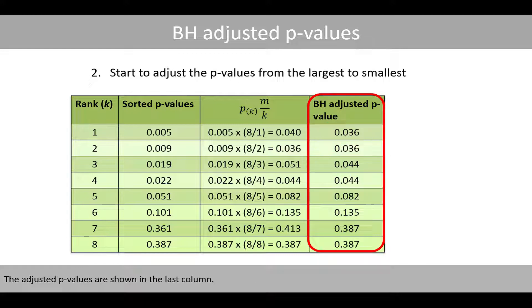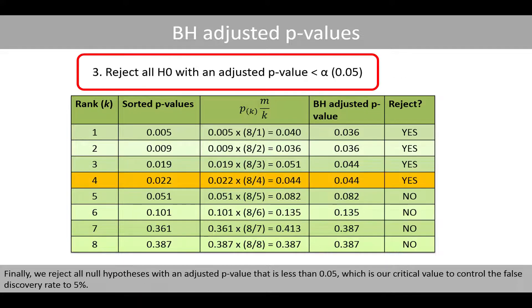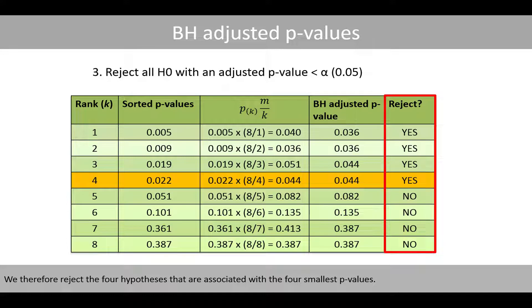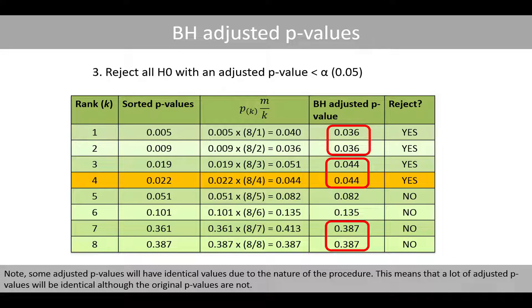The adjusted p-values are shown in the last column. Finally, we reject all null hypotheses with an adjusted p-value that is less than 0.05, which is our critical value to control the false discovery rate to 5%. We see that only the first four adjusted p-values are lower than 0.05, so we reject the four hypotheses associated with the four smallest p-values. Note that some adjusted p-values will have identical values due to the nature of the procedure, meaning that a lot of adjusted p-values will be identical although the original p-values are not.